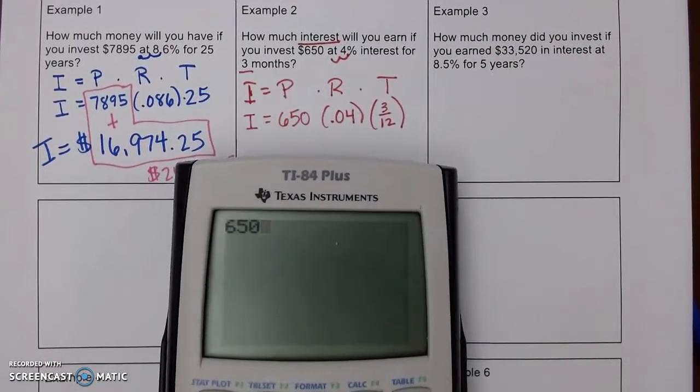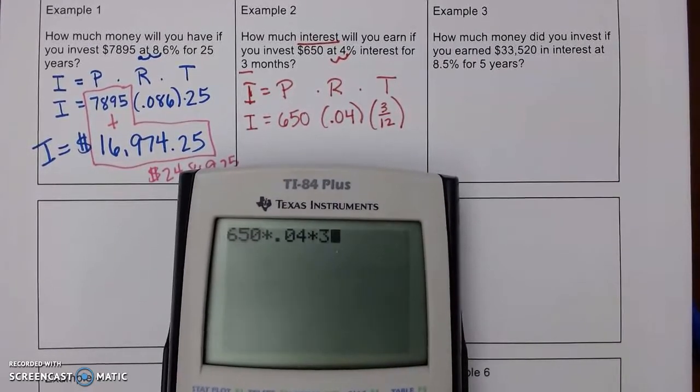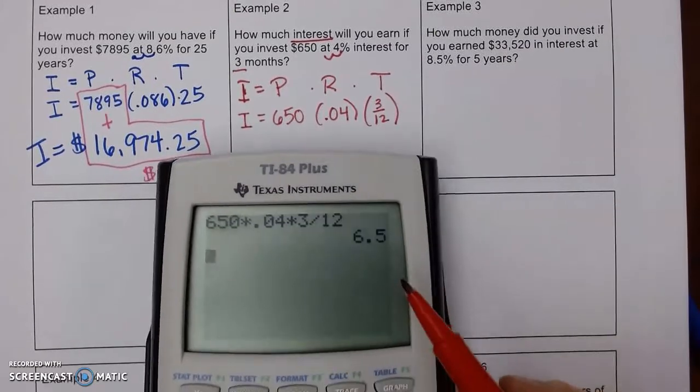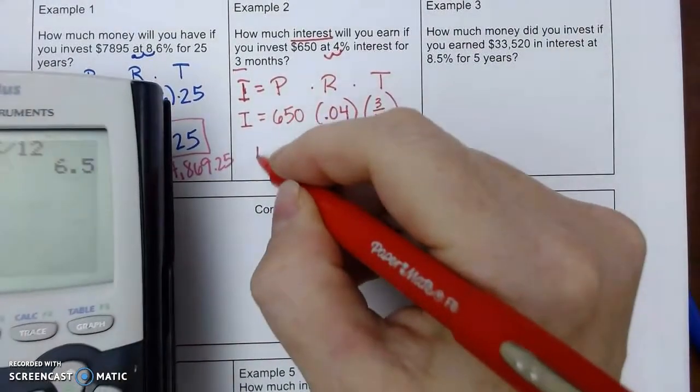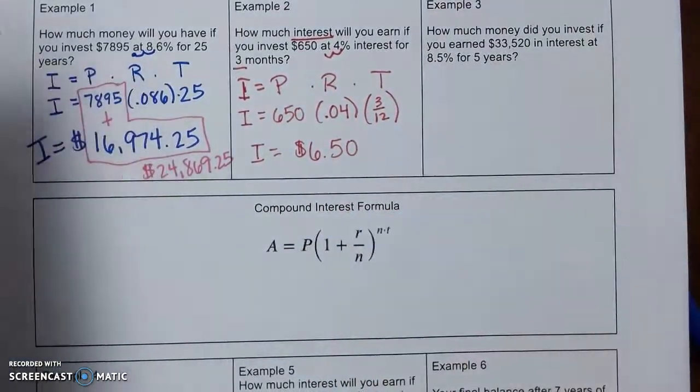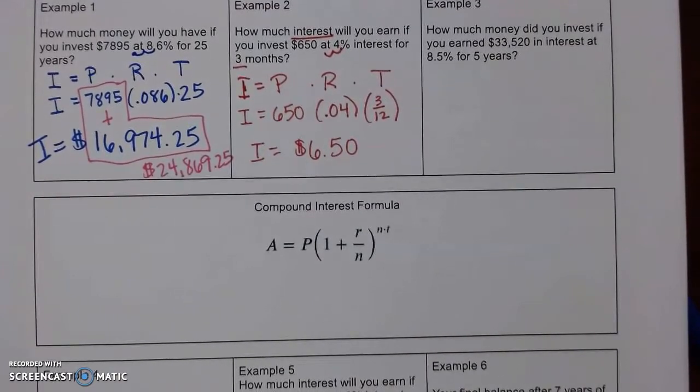$6.50 times 0.04 times 3 divided by 12. So, see how it's 6.5, and we want to write that as money. So we would have $6.50. And that's all they want is the interest this time.